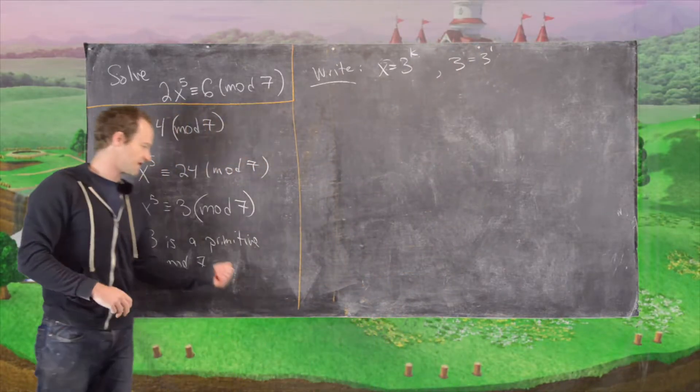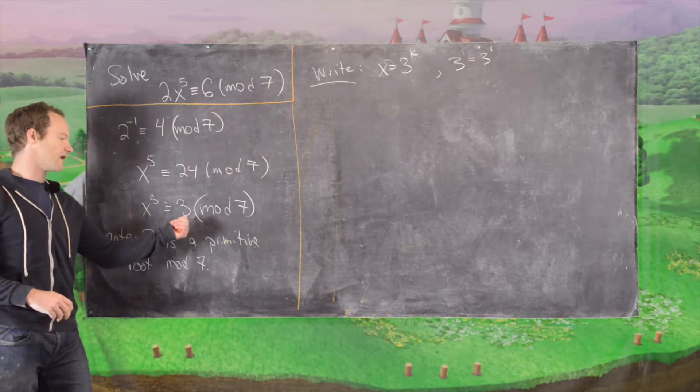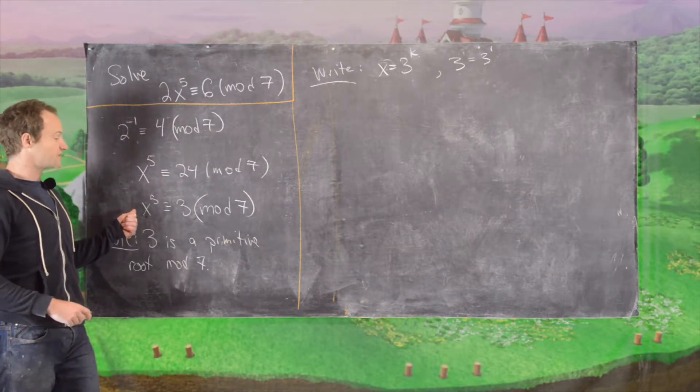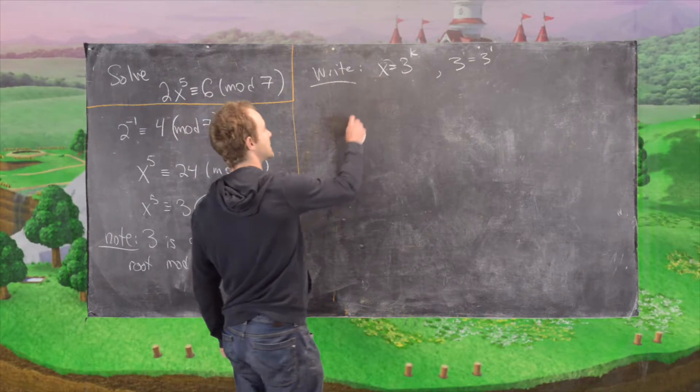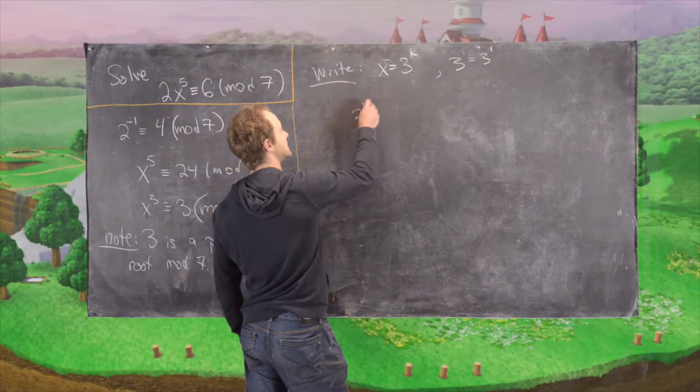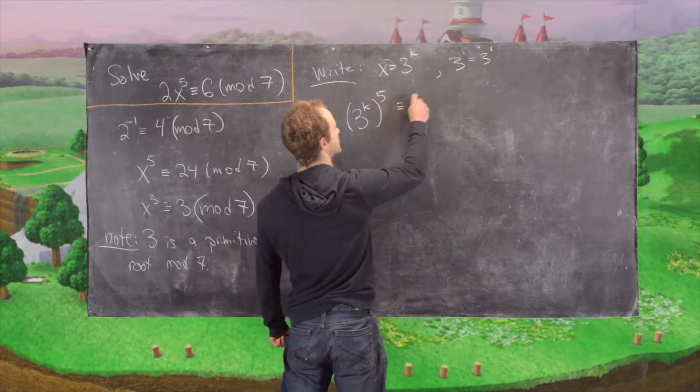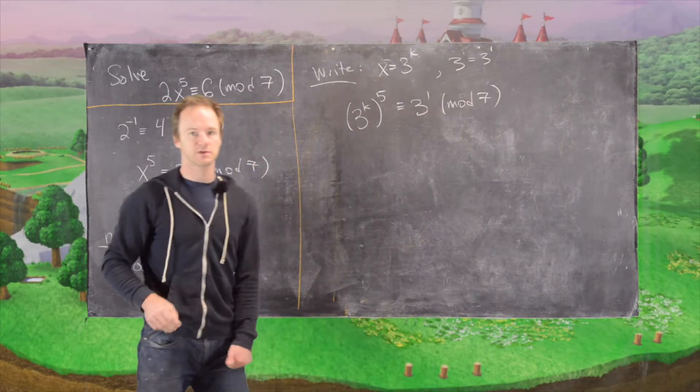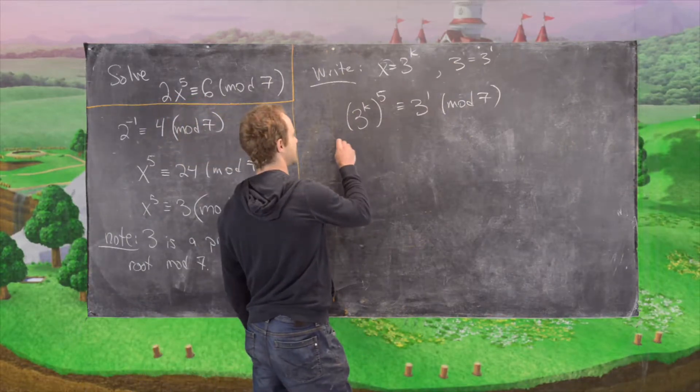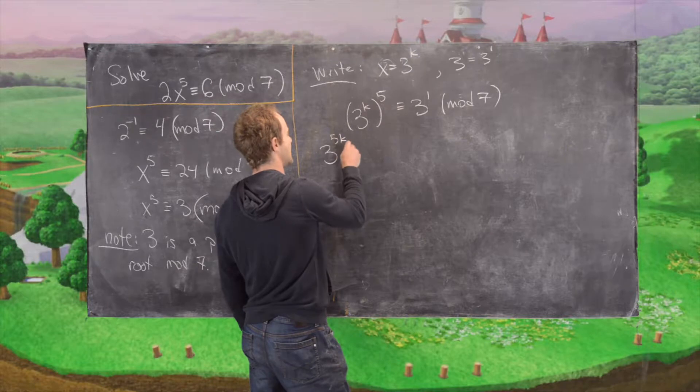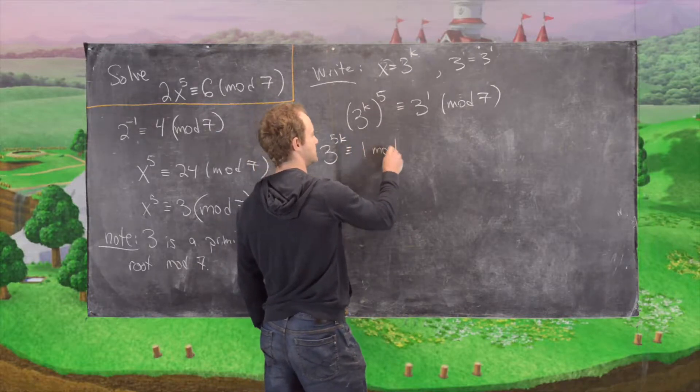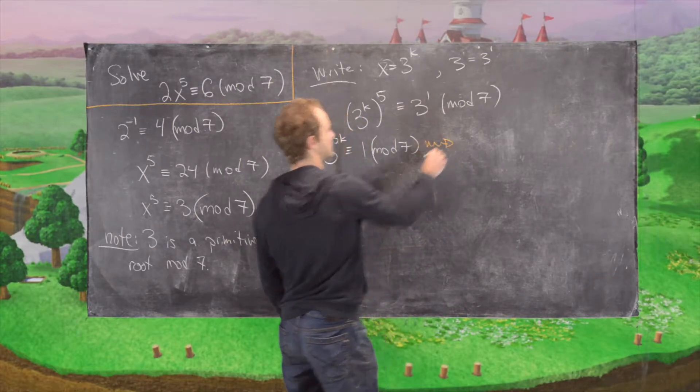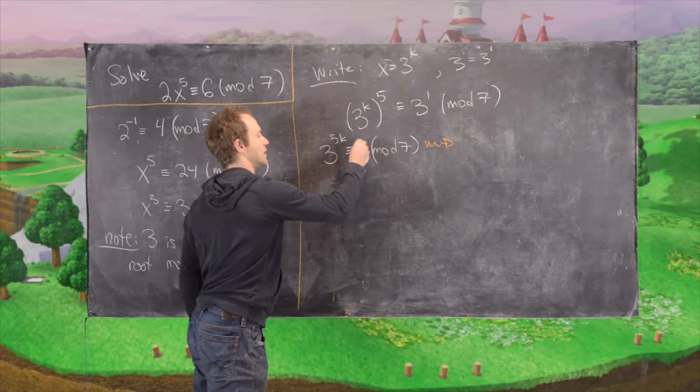Now that might seem trivial, but just to point out that we would have to write that in terms of the primitive root if it weren't already the primitive root. Okay, so that turns this congruence into the following. So we have 3 to the k to the 5th power is congruent to 3 to the 1 mod 7. But that is the same thing as 3 to the 5k is equal to 3 to the 1 mod 7.